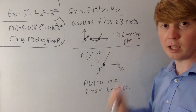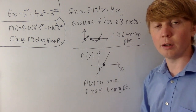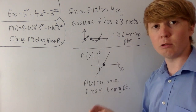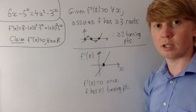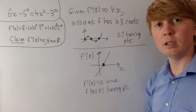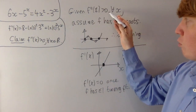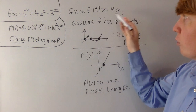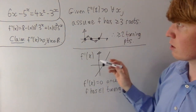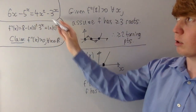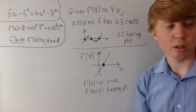This contradicts our assumption of at least three roots. So we have exactly two roots — zero and one — and hence zero and one are the only solutions to this equation. What we need to do now is prove that the second derivative is greater than zero for all x, and this will confirm we have only two solutions.